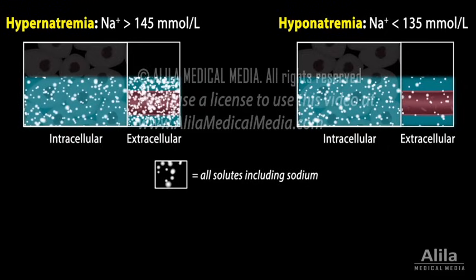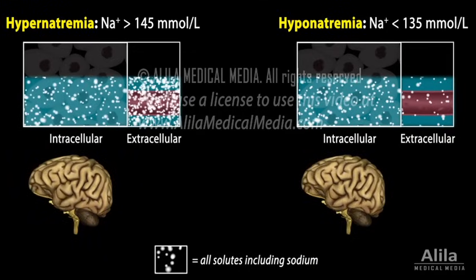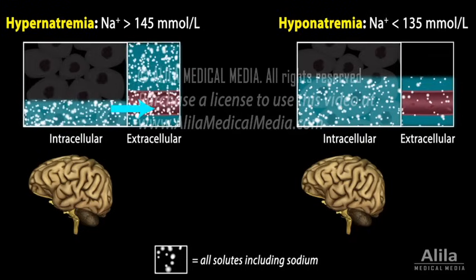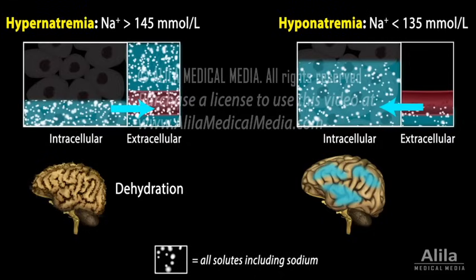Clinical manifestations of sodium disorders reflect disturbances in water movement in the most sensitive organ of the body, the brain. In hypernatremia, high blood sodium levels draw water out of the brain cells, causing dehydration and shrinkage. Whereas in hyponatremia, low concentrations of plasma sodium drive water into brain cells, making them swell, causing edema.